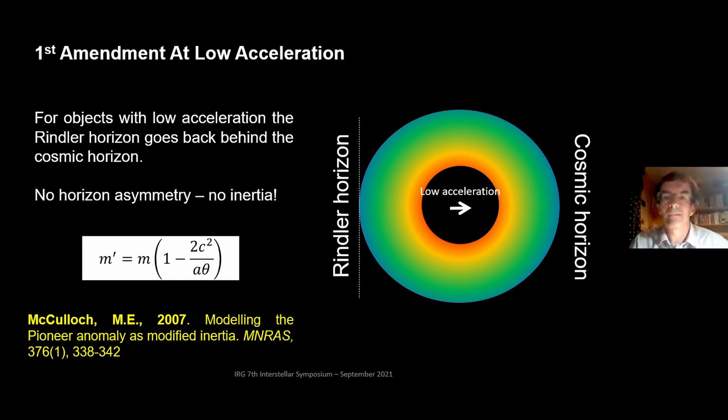But that's not the whole story. If the acceleration is extremely low, as shown here in this picture on the right, then the Rindler horizon moves back so far that it's about the same distance as the cosmic horizon all the way around the object. So now you can see the Unruh radiation is hot in the center but cold at the edge near the horizon. This means that this imbalance that we had before has gone. So this theory predicts that inertial mass will collapse for very low accelerations, and I showed this in a paper back in 2007.